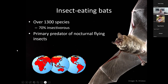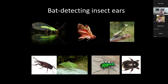Bats are a primary, if not the primary, predator of nocturnal flying insects. If you think of this from a global perspective, basically if you're an insect flying around at night almost anywhere in the world, there's a very good chance that bats are present as one of, if not your primary predator. This shows the kind of global context of these interactions between bats and insects.